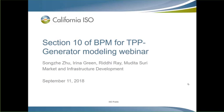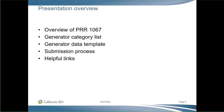Thank you for joining us for this webinar today. To give everyone a quick background, we added a new section in the Transmission Planning BPM under PRR 1067. This section outlines the new data submission requirements for all participating generators in the ISO market. It also sets the timelines for these different categories and phases of generators. In the end, it's going to be a five-year process conducted by the ISO and all the PTOs for receiving the requested and required data from all the participating generators.